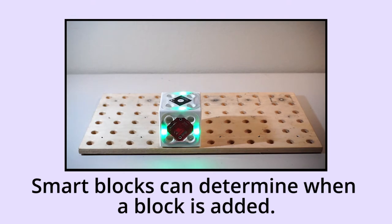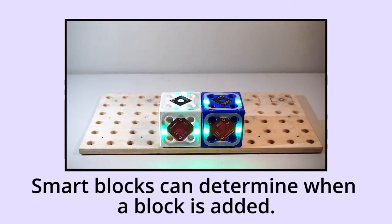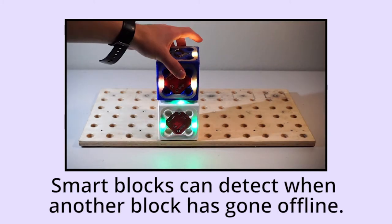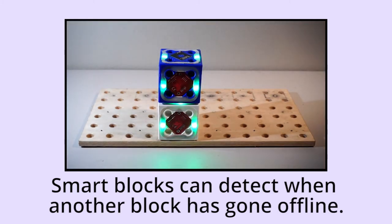Smart blocks can determine when new blocks have been added to the structure, as well as determine when blocks are removed. They can also perform health checks of the structure, shown here where the bottom block recognizes the top block has gone offline.